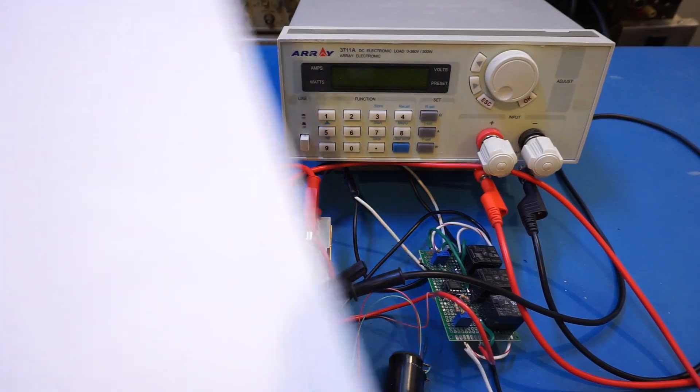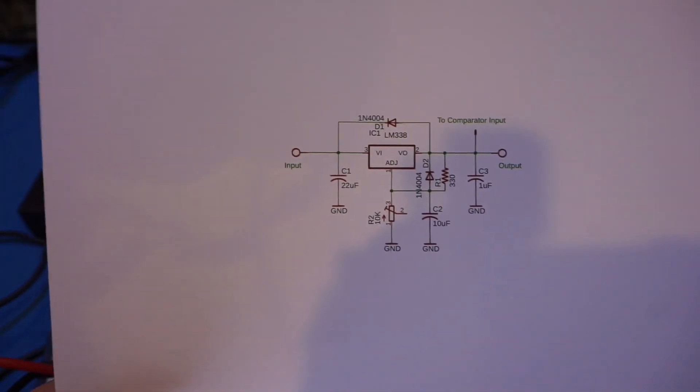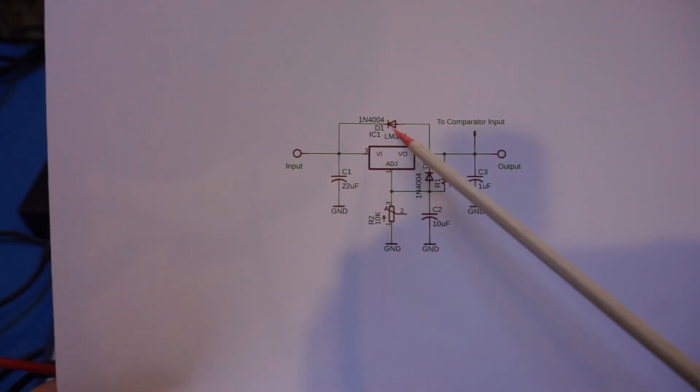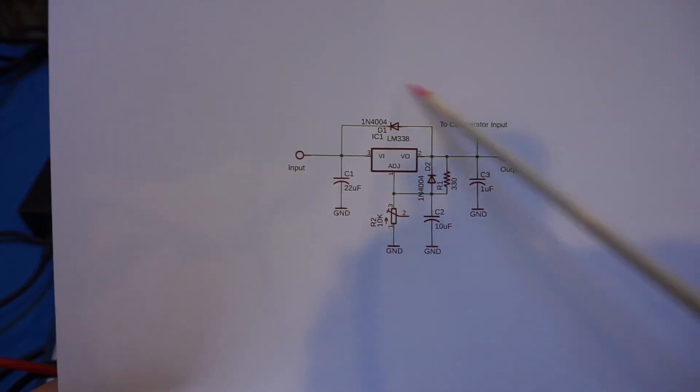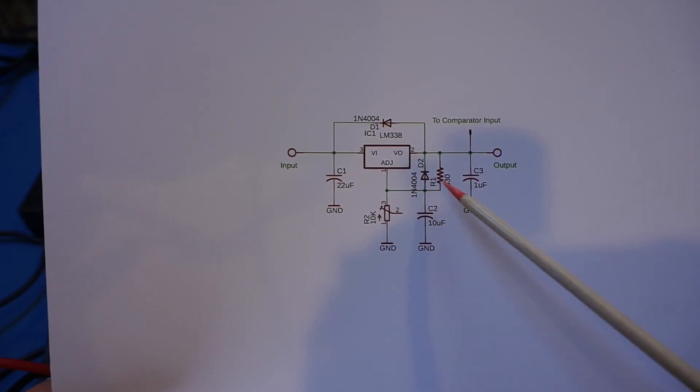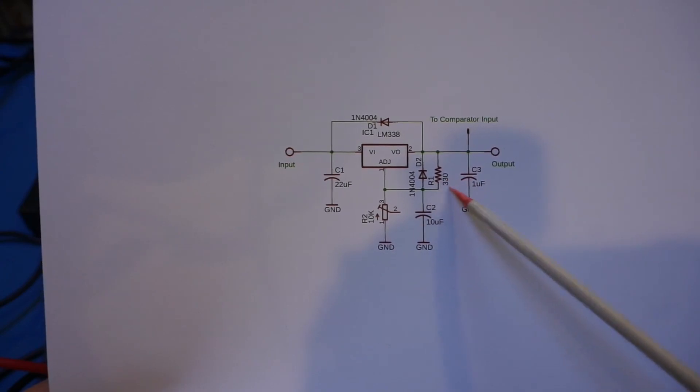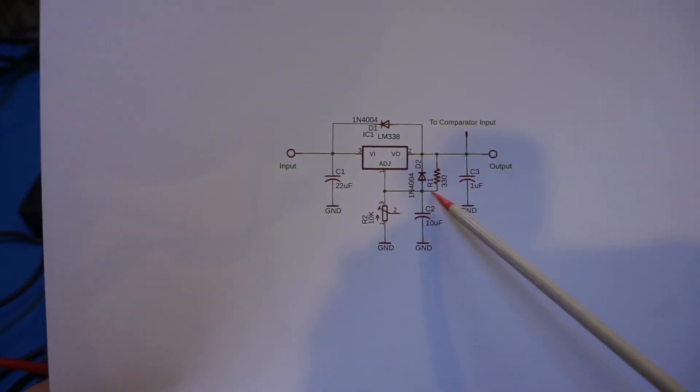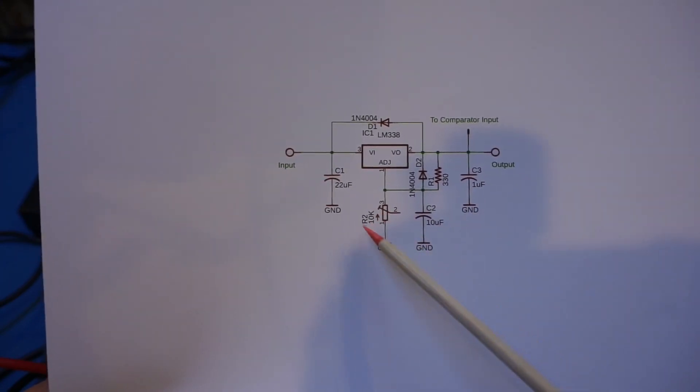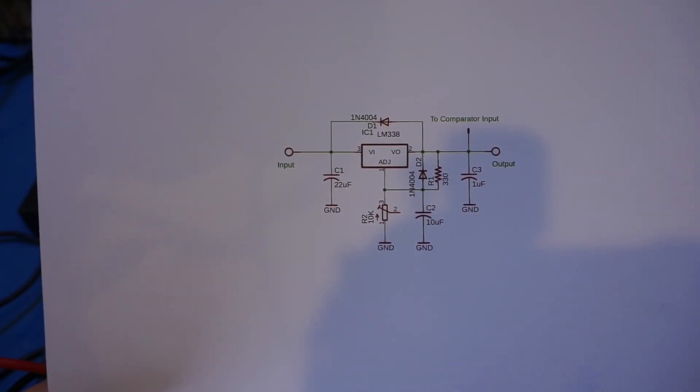And the last piece of circuitry I want to show you here is this linear regulator output portion. And here we have an LM338. And the circuit here is really standard. The only thing you may want to change are these R1 and R2. And based on the value here, I have 330 ohm for R1 and a 10k potentiometer for R2. You roughly get the range of output between 1.25 to 35 volts.